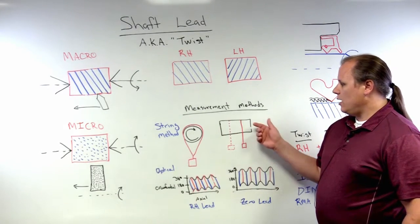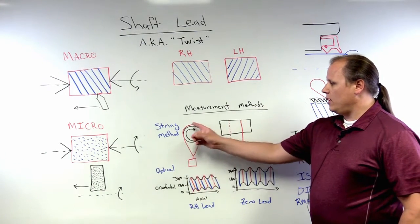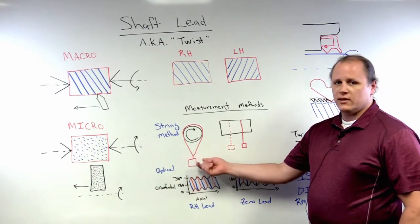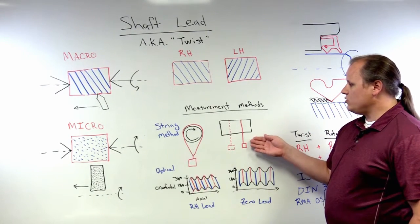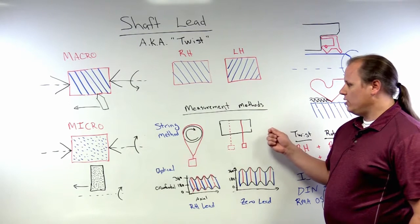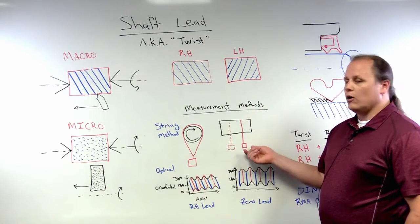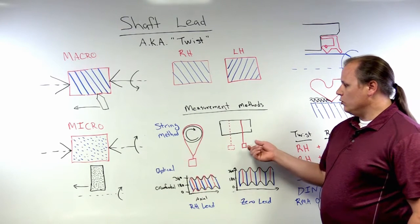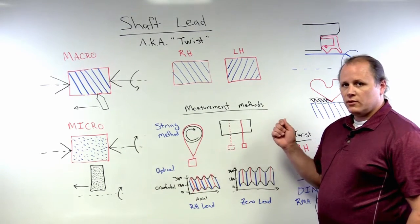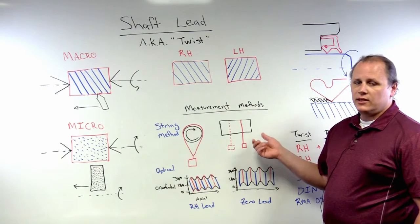In this method, you mount a shaft in a rotating device. You drape a thread with a weight attached to it over the shaft. From the side view, as you slowly rotate the shaft, you may observe movement to the left or to the right from its original position. If you do observe movement, you are observing that the shaft likely has lead.